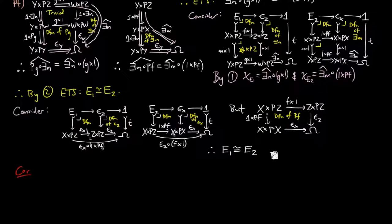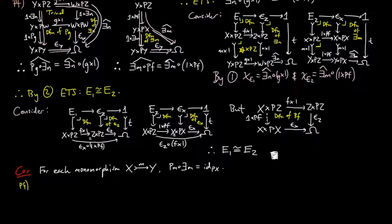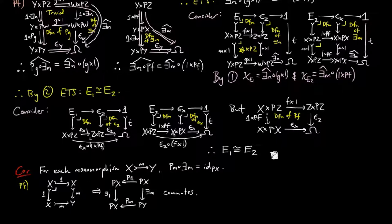Then, as a corollary, we have that for each monomorphism m, Pm ∘ ∃m is equal to the identity on PX. For the proof: m is mono if and only if the following is a pullback. Thus, by Beck-Chevalley, the following commutes. But ∃(identity) equals the identity on PX, which is in turn equal to P on the identity. Thus, Pm ∘ ∃m is the identity on PX.